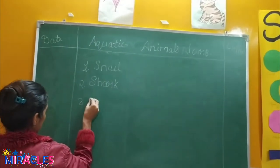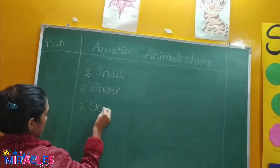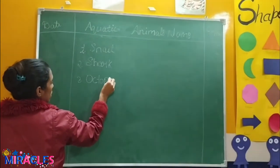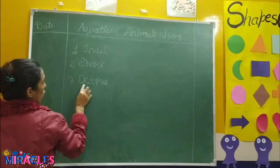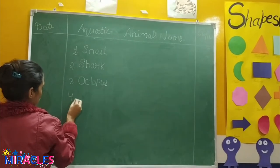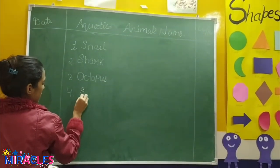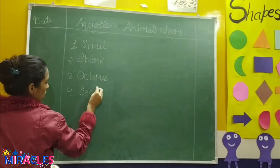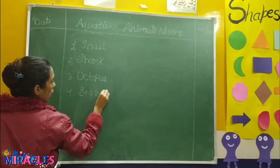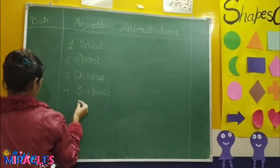Third is octopus — O-C-T-O-P-U-S, octopus. Fourth one is seahorse — S-E-A, H-O-R-S-E, seahorse.